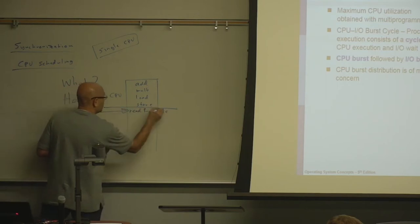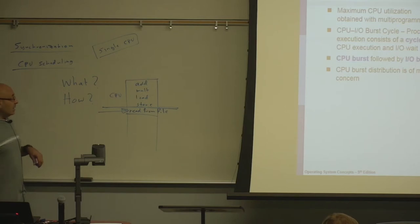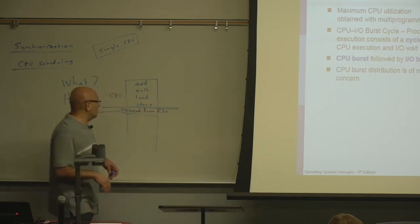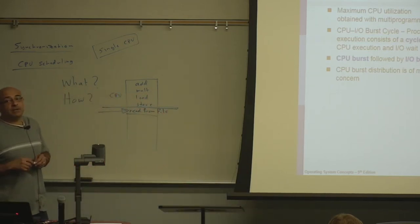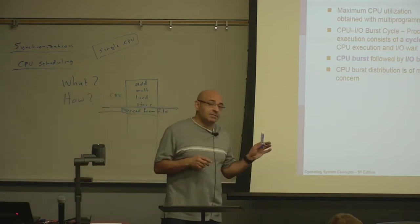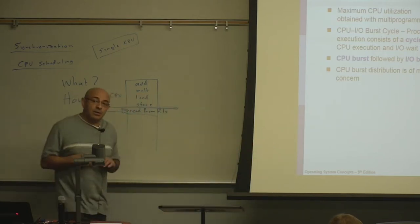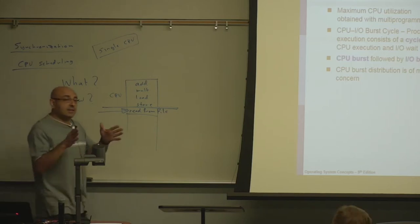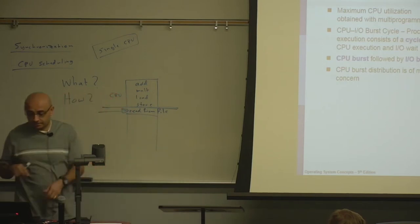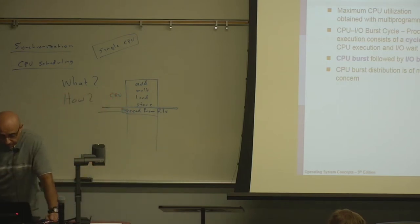This means the CPU burst has ended and now an IO burst starts. The process will be waiting for IO until that service is complete. Then the state of the process will change from waiting to ready. The process will never get the CPU immediately — we put it in the ready state and let the scheduler choose which process gets the CPU next.